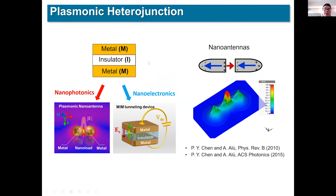This is an example of a plasmonic device. The metal-insulator-metal — also called the MIM heterojunction — is a general plasmonic platform for waveguides like nano-cavities, many materials, and nano antennas. Such a MIM device can support strong localized fields or localized surface plasmon polaritons with strong localization.